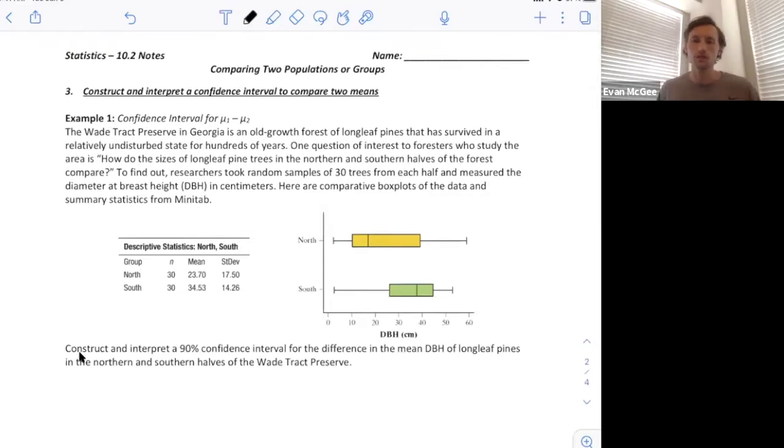We've got two populations: the population in the north and the population in the south. The parameter of interest is the mean DBH, diameter at breast height in centimeters. Fortunately, they've given us the summary statistics and two box plots.